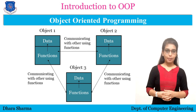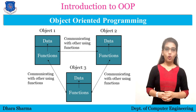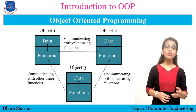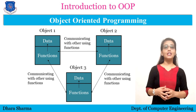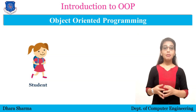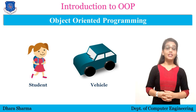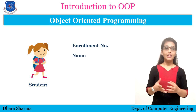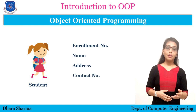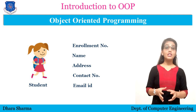For example, a student can be considered as an object. Any real-world entity that has some information to be stored can be considered as an object. So a student can be considered as an object, a vehicle can be considered as an object. A student has multiple information to be stored, like enrollment number, name, address, contact number, email ID, etc. So the main focus is the object.